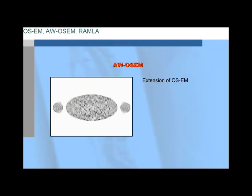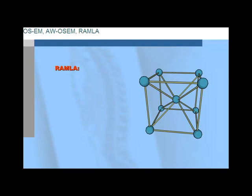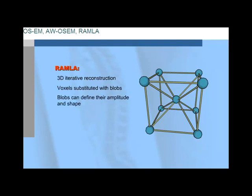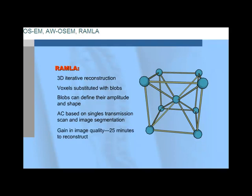AWOSEM is simply an extension of the OSEM technique, with the added capability of weighted LORs that pass through the more highly attenuated areas, thereby addressing artifacts detected in the more commonly found OSEM algorithm. Finally, there is RAMLA, or Row Action Maximum Likelihood Algorithm. This 3D iterative image reconstruction algorithm substitutes voxels with spherically symmetric volume elements called blobs and places them on a uniform 3D grid. The advantage of blobs is their ability to find their amplitude and shape, thus impacting reconstruction image quality. Attenuation correction, incorporated in the algorithm, is based upon a singles transmission scan followed by image segmentation. RAMLA provides a small gain in image quality; however, it requires up to 25 minutes to reconstruct the image volume.